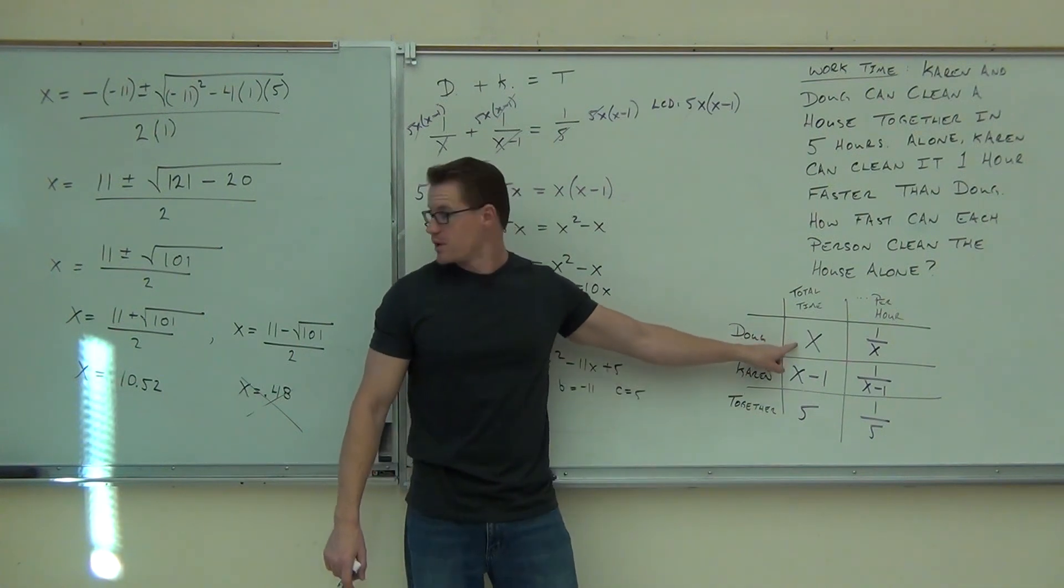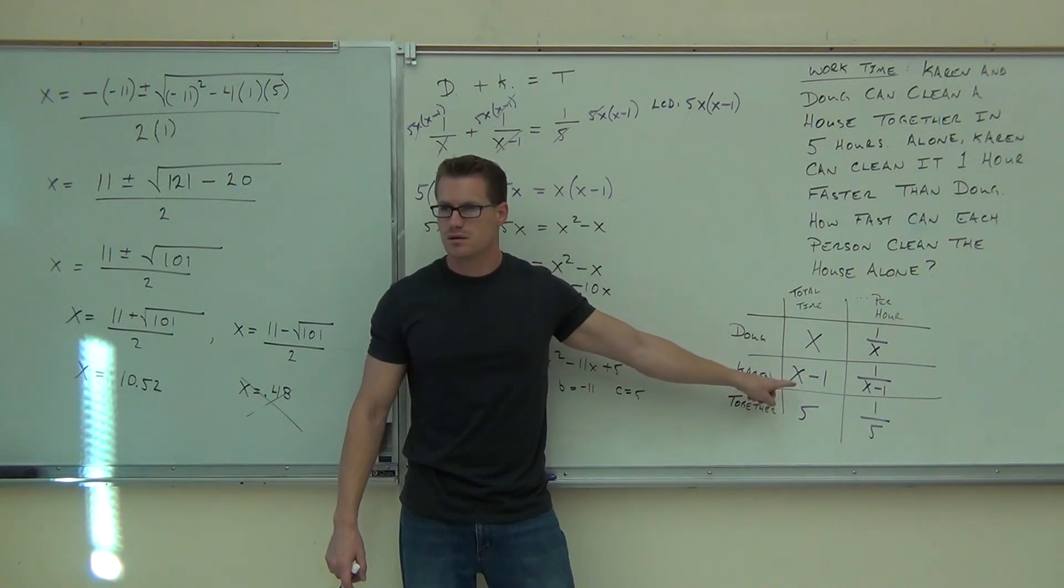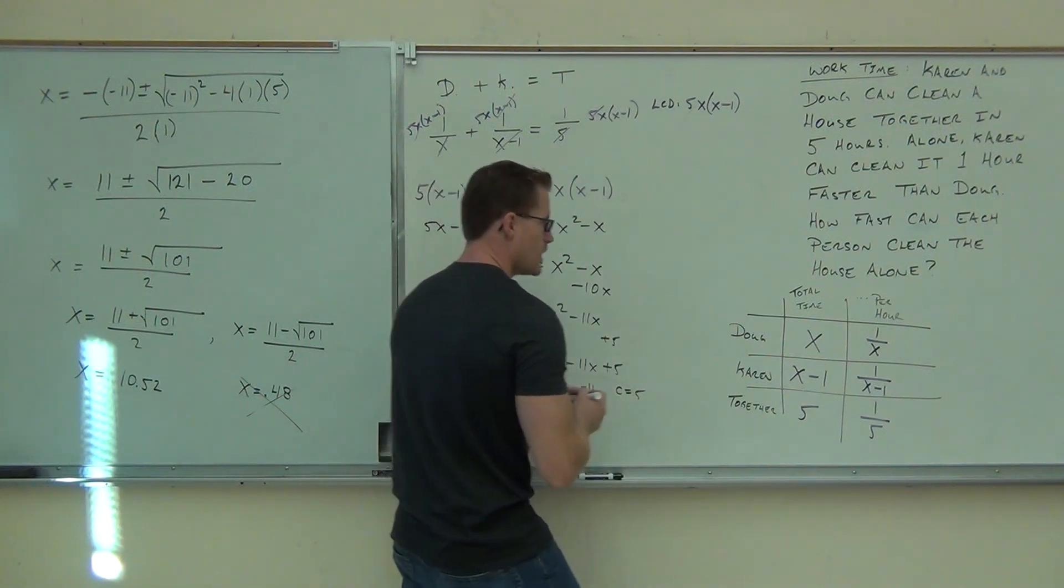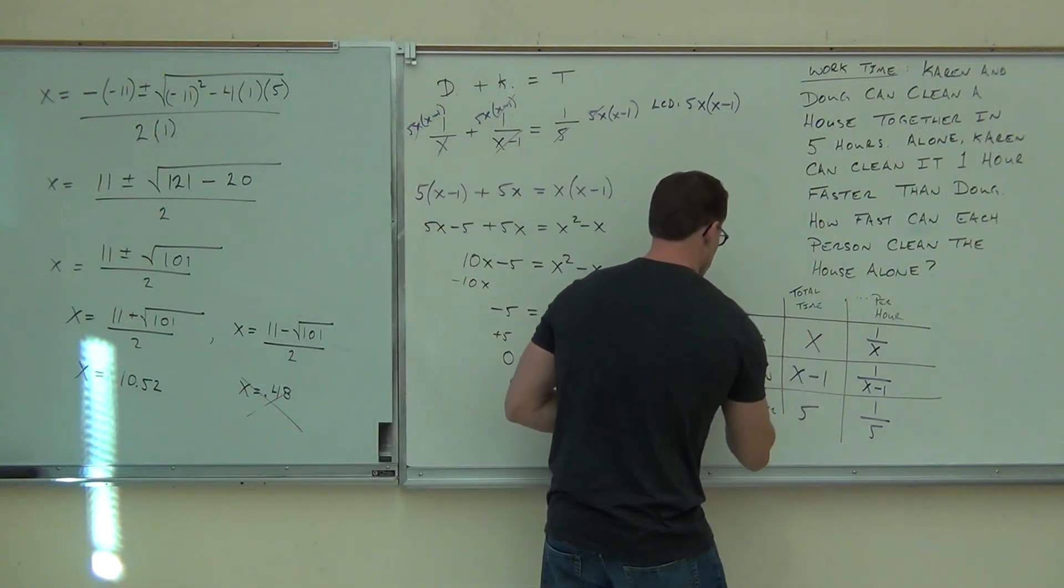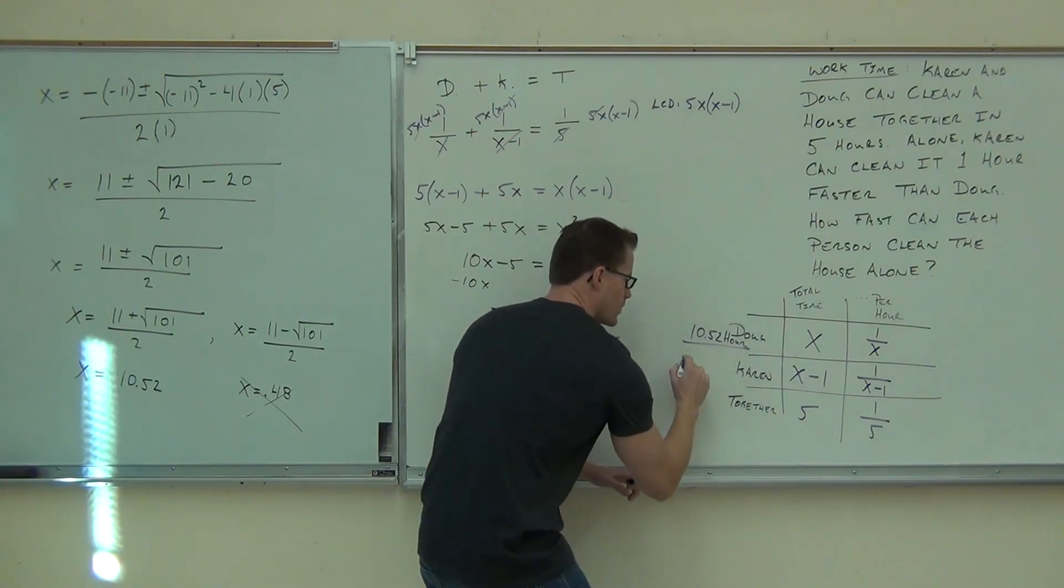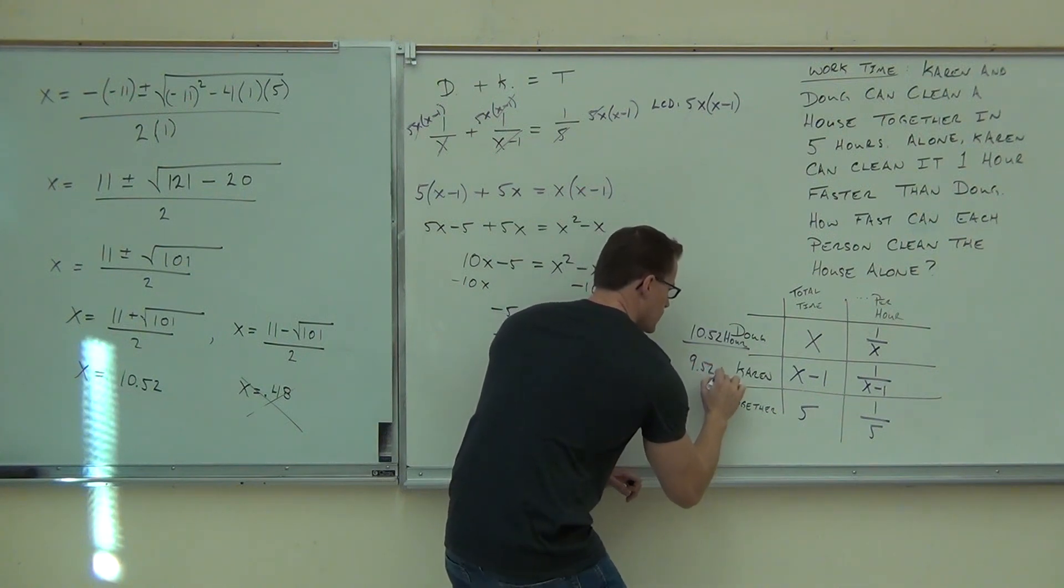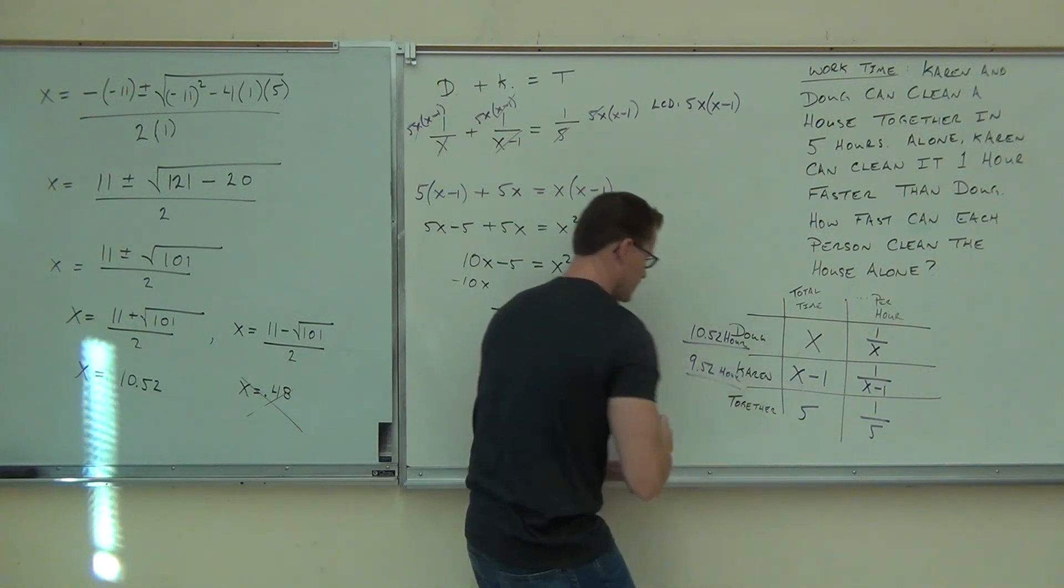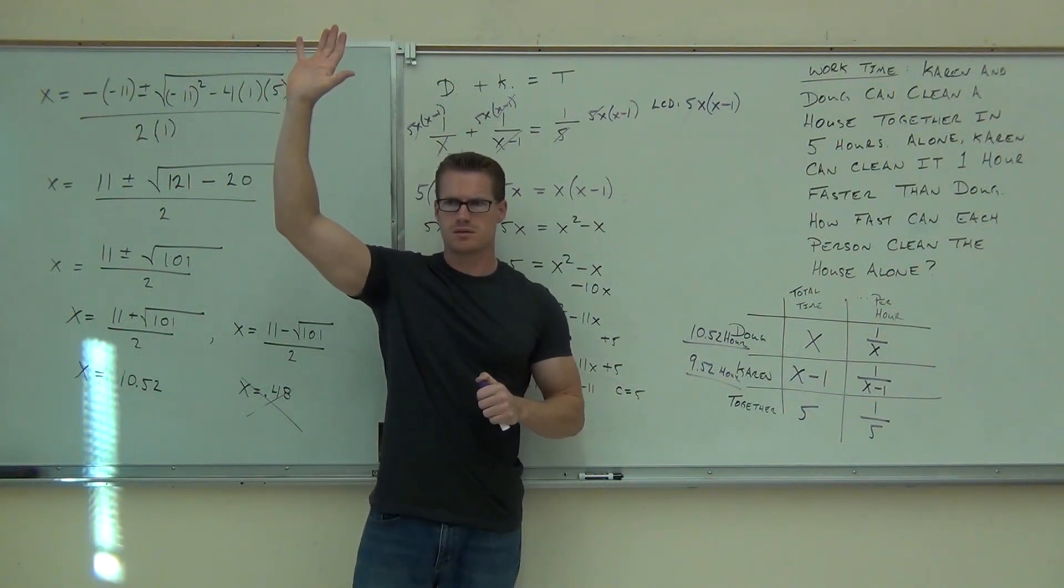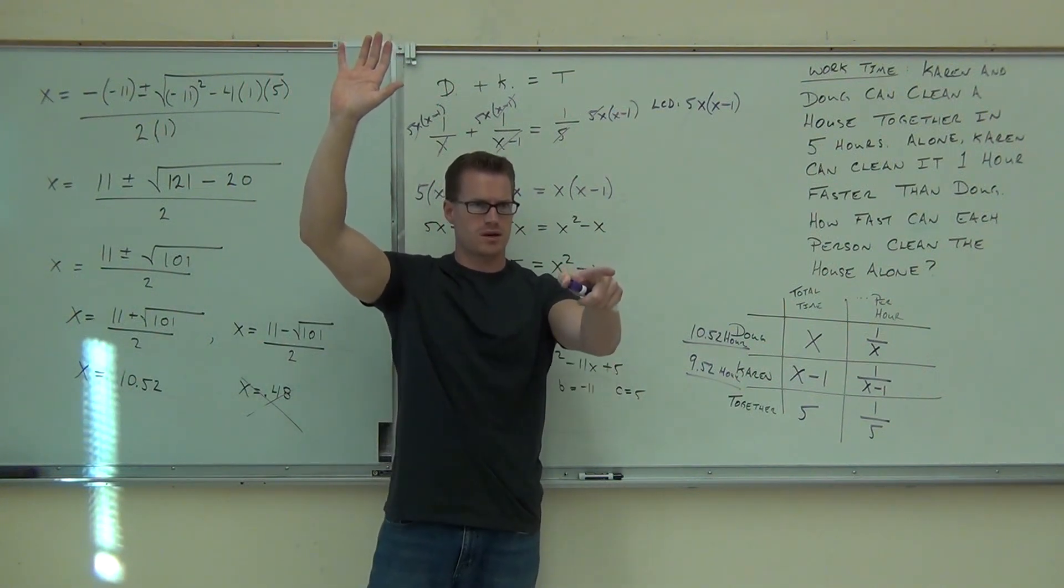Now, Doug is 10.52 hours. How much is Karen going to be? 9.52. How'd you figure that out? Minus 1. Okay, so we come back over here. Doug was 10.52 hours. Karen was 1 minus that, 9.52 hours. Would you raise your hand if you're a little confused with this last example that we did? Guys on the left-hand side, you okay with that? Okay.